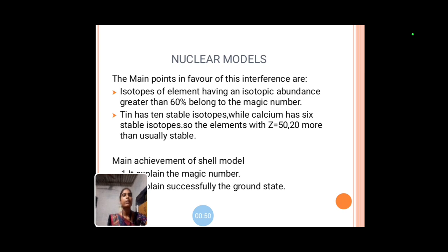The main points in favor of this theory are: isotopes of elements having isotopic abundance greater than 60% belong to the magic number. Tin has 10 stable isotopes while calcium has 6 stable isotopes. So, the elements with Z = 50 or 20 are more than usually stable. Main achievement of shell model: It explains the magic number. It explains successfully the ground state.